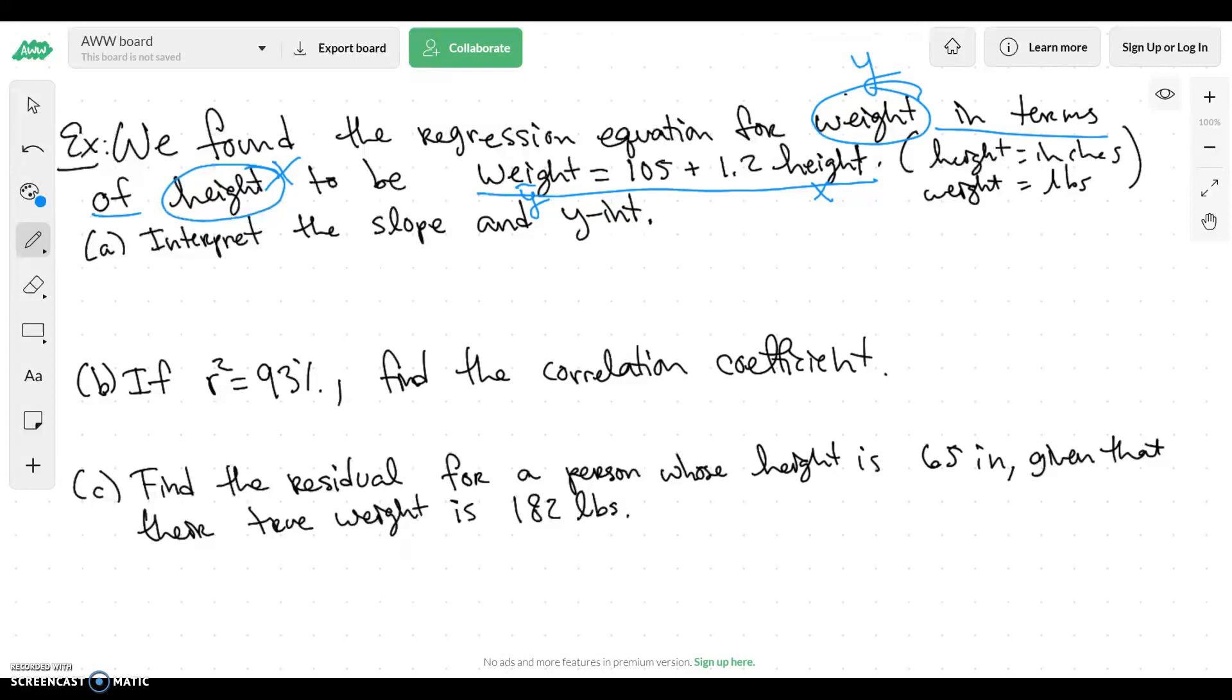Okay, so the first thing that we want to do is something that's kind of confusing a lot of you, and that's interpret the slope and the y intercept. So if you remember our slope, or at least in this case, is going to be equal to the thing that's right next to the x value, which is a 1.2.